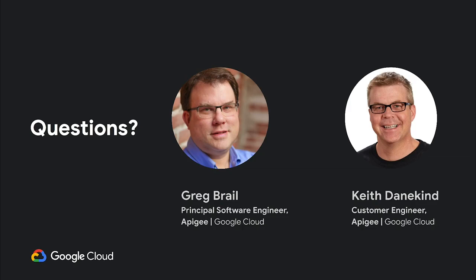Cloud Endpoints and Apigee today do different things for different customers. Cloud Endpoints is handy for sharing an API with other Google Cloud users, runs at low cost, is easy to set up, and does a fairly limited number of things. Apigee is a full-featured API management product with a whole bunch of complex enterprise features. Both come from the same company and the same group of people, so over time we're going to make them work together more seamlessly. Right now they serve different purposes for different kinds of users, and if you're using Cloud Endpoints, we'd love to hear from you for customer feedback.